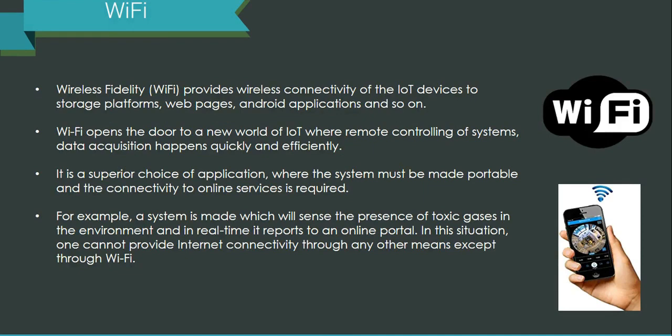The next one to understand is Wi-Fi. Wireless Fidelity provides wireless connectivity for IoT devices to storage platforms, web pages, and Android applications. We are used to Wi-Fi at home, at the office, at railway stations, bus stands, and many other places. Wi-Fi has opened the door to a new world of IoT options where remote controlling of systems and data acquisition have become reality, done quickly and efficiently. It is the most preferred option where the system must be portable and connectivity to online services is required. For example, a system sensing toxic gases in the environment and reporting to an online portal would rely on Wi-Fi as the best means of communication.